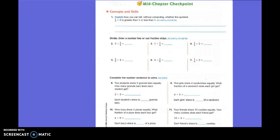It says, how can you tell without computing or doing your math problem whether the quotient of 1 half divided by 6 is greater than 1 or less than 1? So we're taking a fraction and we're dividing that into a whole number, which is 6.